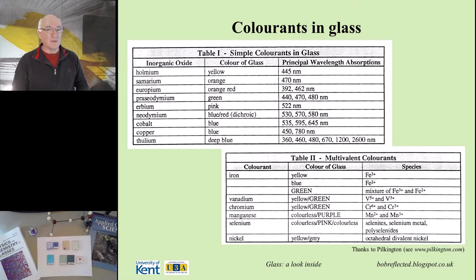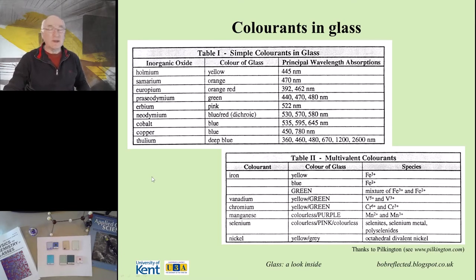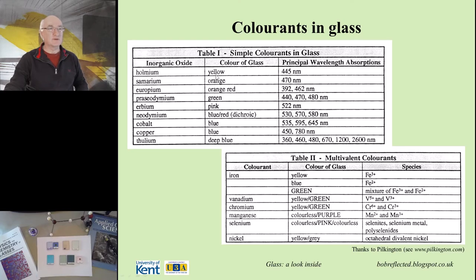These tables come from Pilkington, the UK glass company — just a list of the metals from which different colours come. As you can see, whatever metal we put in we end up with a different colour. Some metals actually give the same sort of colouring as others: for instance we can get a blue from cobalt, from copper, and from neodymium; even some forms of iron depending on its state can give us a blue coloured glass.